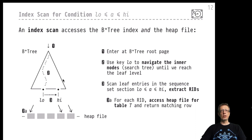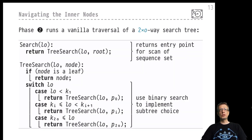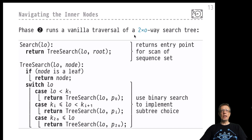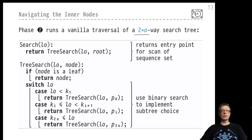In summary, an index scan hunts for the low key value, finds its first occurrence in the sequence set, follows the sequence set until the high border value is reached, then ends the scan because nothing else is to be found. When traversing the inner nodes of the B+ tree, what you're performing is a vanilla search in an N-ary search tree, where N is the maximum fan-out. A straightforward recursive routine guides the search using the separator values found in the inner nodes.